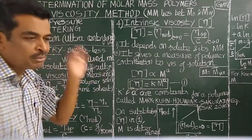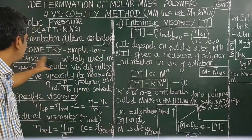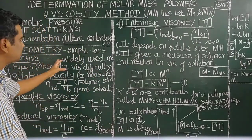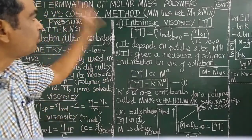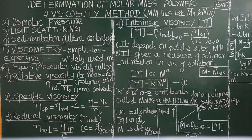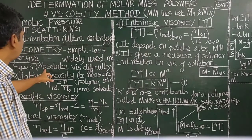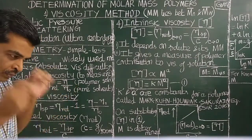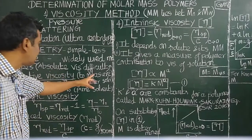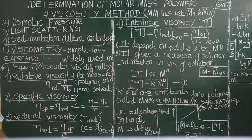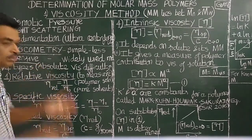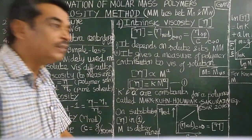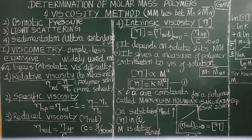It is the simplest method, cheap, and less expensive — widely used method for the measurement of molar mass of polymers. In particular, it is very difficult to measure the absolute viscosity of the polymer. Therefore, there are four types of viscosities defined.